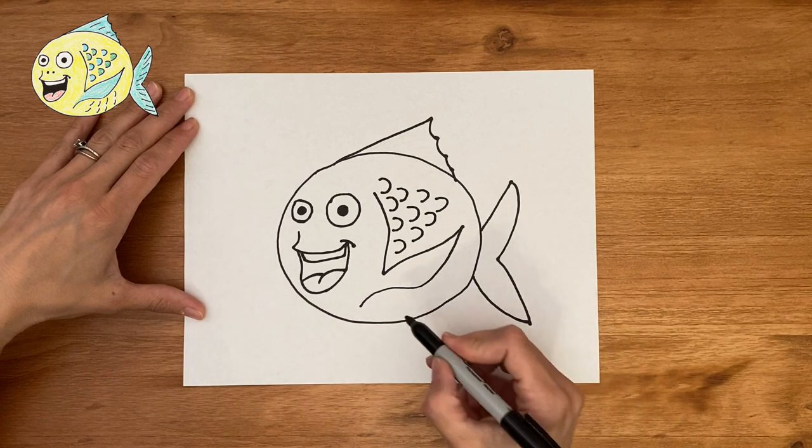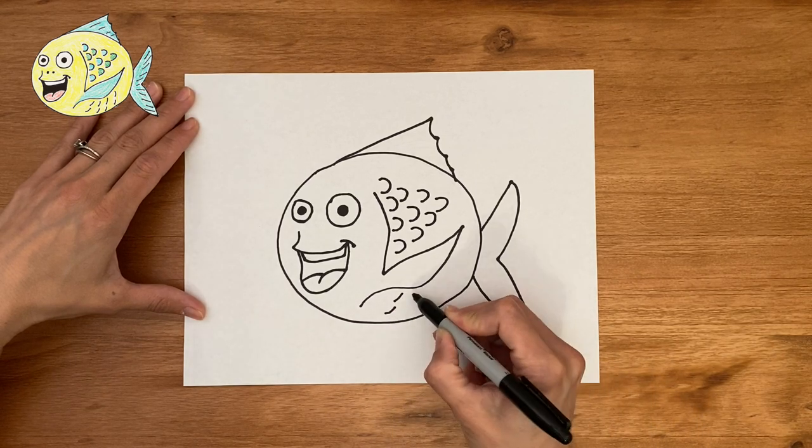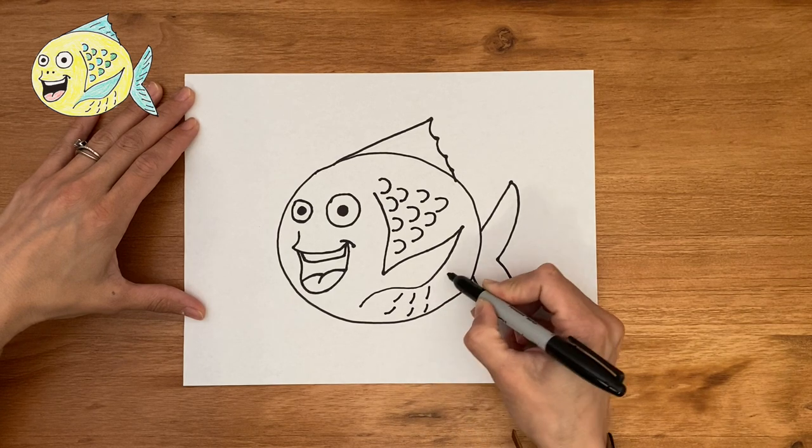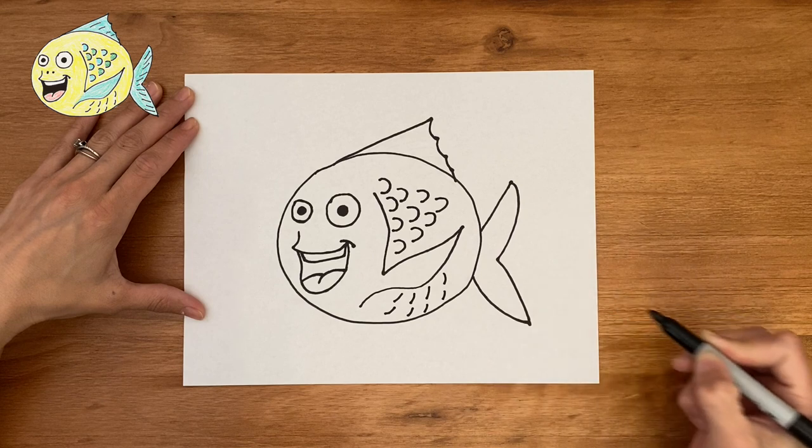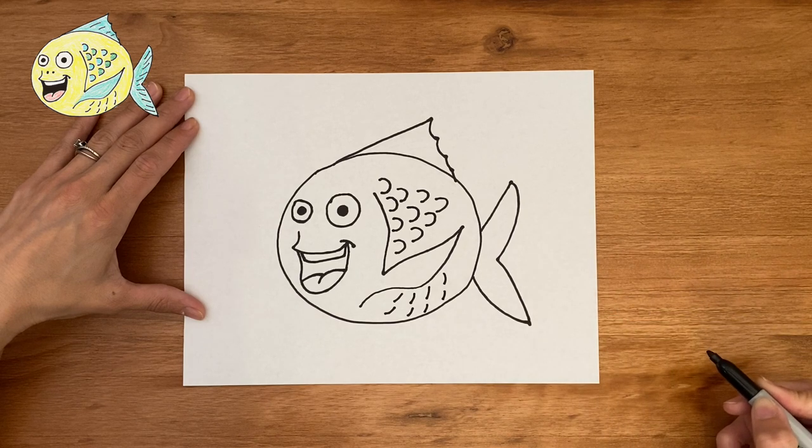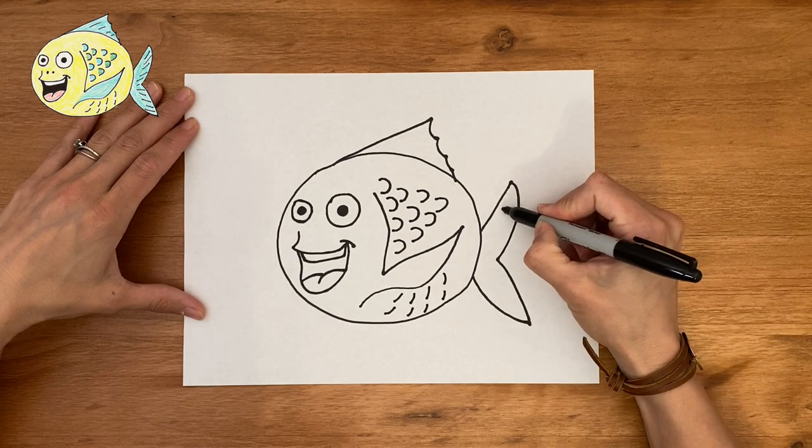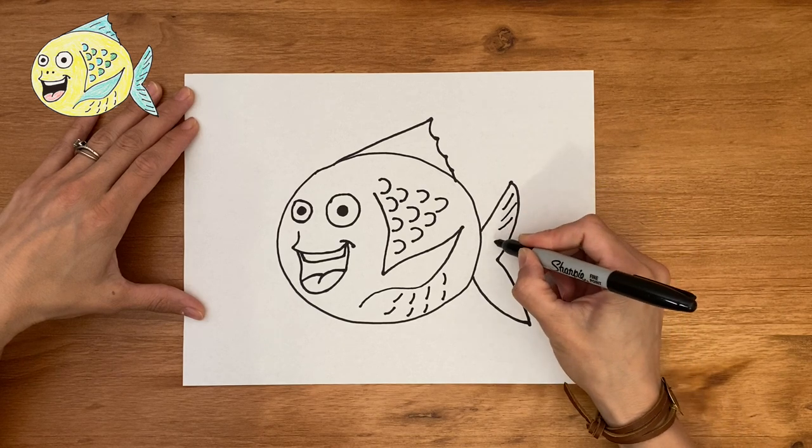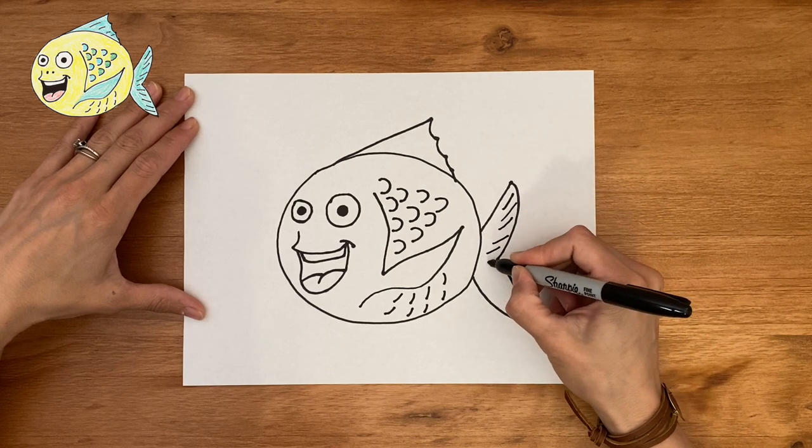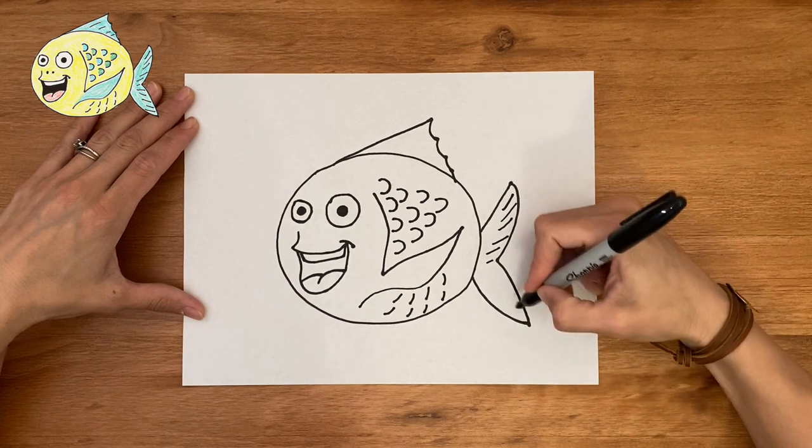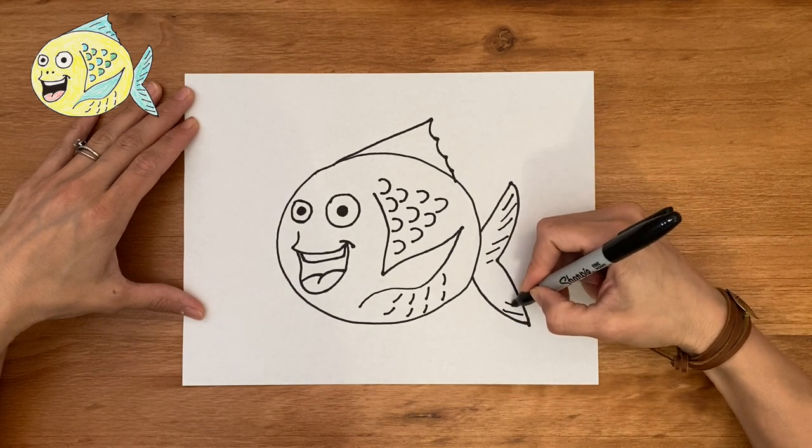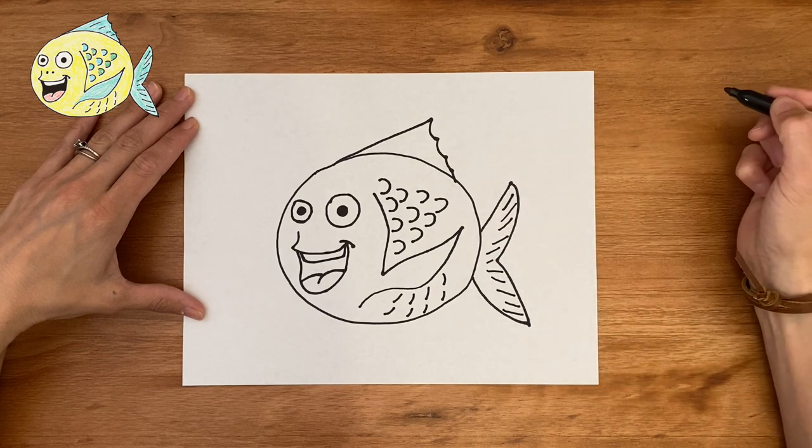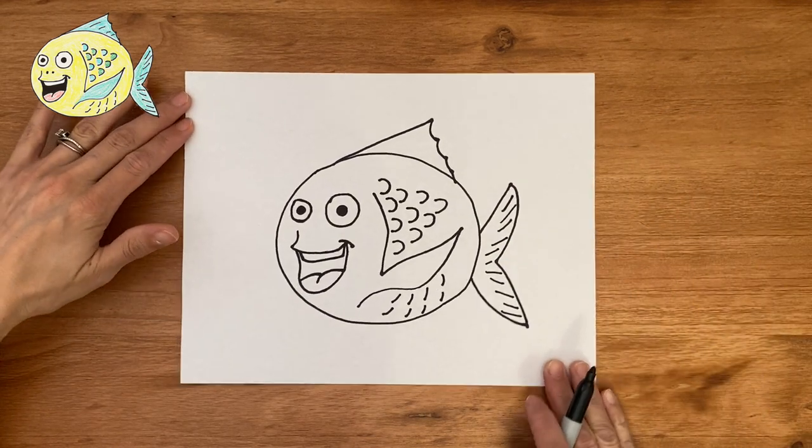Let's just add some more detail to the bottom. I'm just going to add a few little curved lines here to represent some underbelly scales. Great. Let's add some to the back of the fish. Just lines connected at the back. I feel like the more detail, the better. Kind of gives your fish a bit more life. Great. And there's our scales.